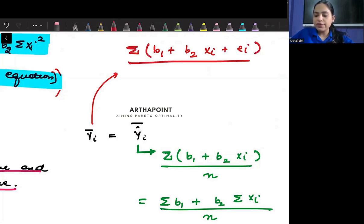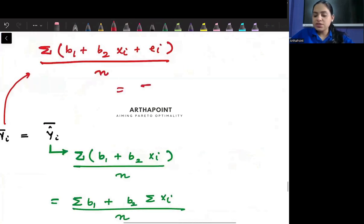I would have done sum and divided by the number of observations. And this would have given me summation b1 plus b2 summation xi plus summation ei by n.